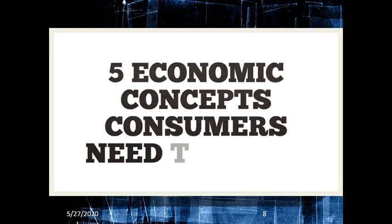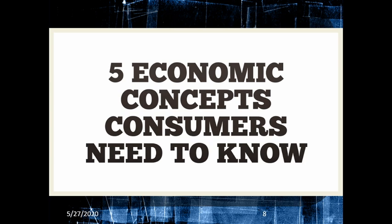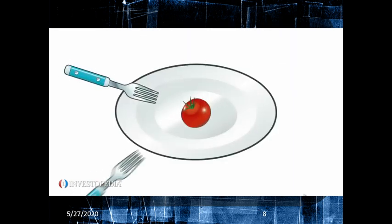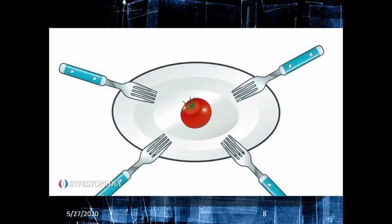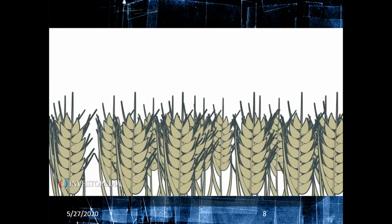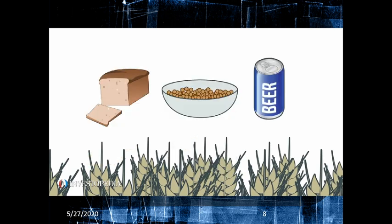This is from Investopedia. Economics impacts every moment of our lives, and there are some basic concepts everyone should understand. Scarcity refers to the limited means available to meet unlimited wants — there is always a choice to be made. For example, there is a finite supply of wheat grown every year, but there are billions of people who want bread, cereal, and beer from that wheat. How do we decide to use our scarce supply of wheat?